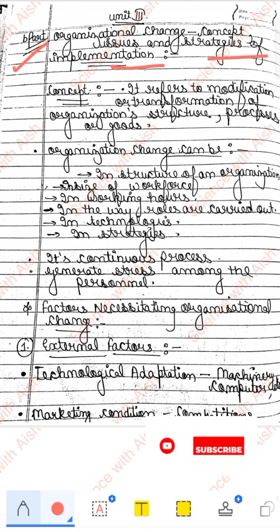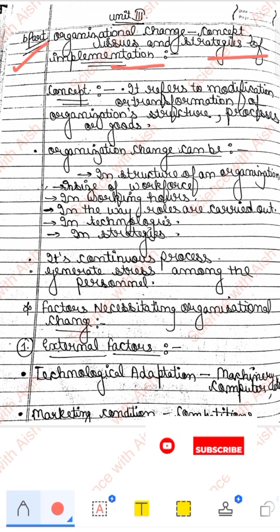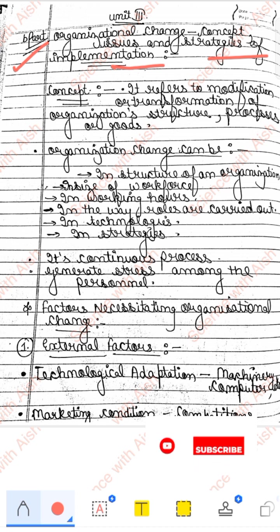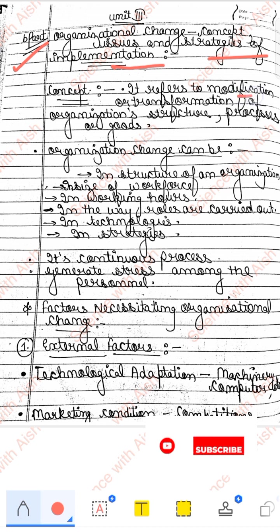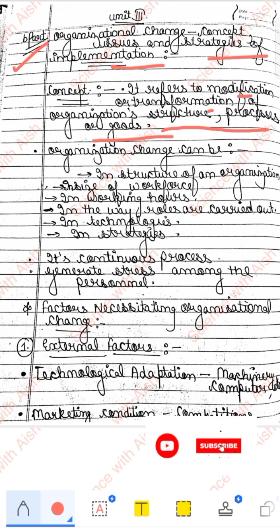So dekhein organizational change kya hota hai — jaise aap kahin pe kaam kar rahe ho, kisi business mein, ya as a teacher school mein kaam kar rahe ho, toh wahaan pe kuch changes aate hain, kuch modifications hoti hain, kuch transformations hoti hain. May be rules mein changes aate, employees mein changes aate, may be technology nayi aaye aur aapko chalani nahin aati. Toh woh matlab kya hai — modification or transformation of organization structure, processes ya goals — koi bhi changes aate hain, toh usko hum organizational change bolenge.